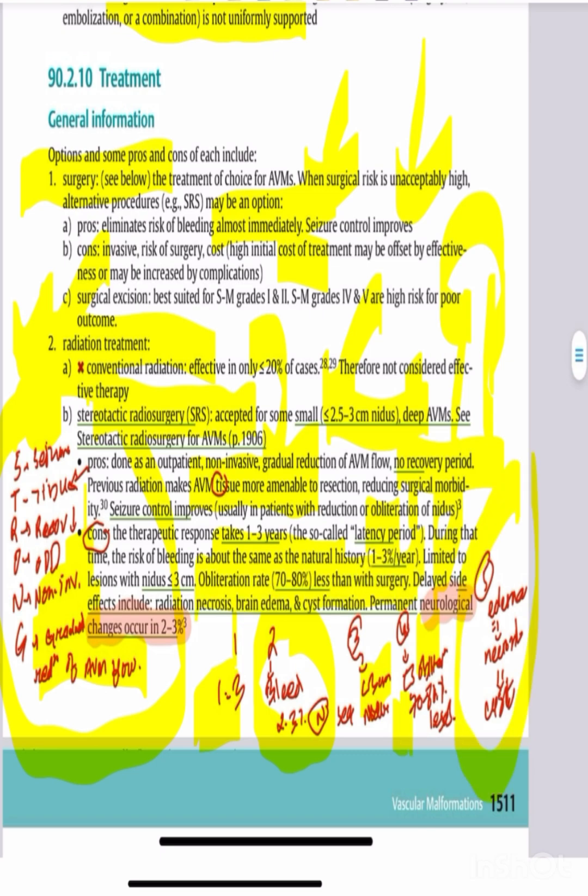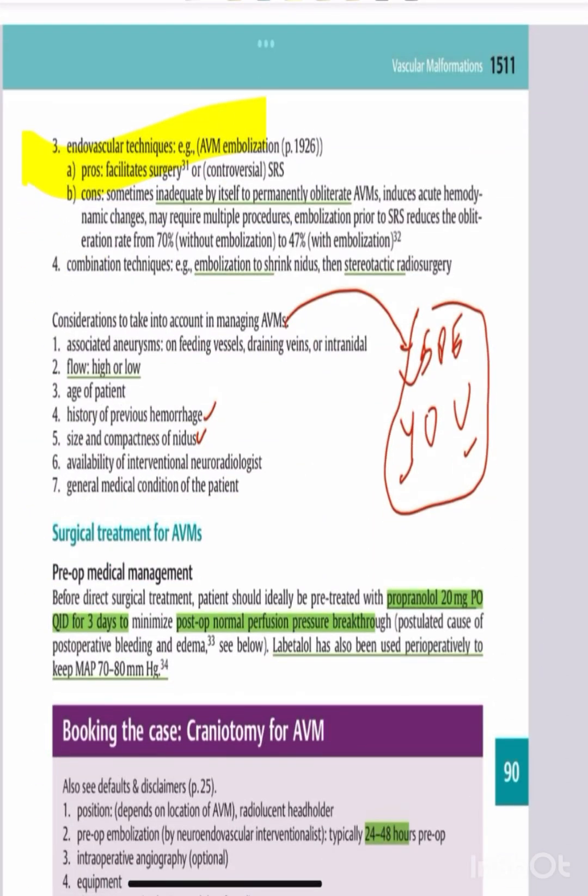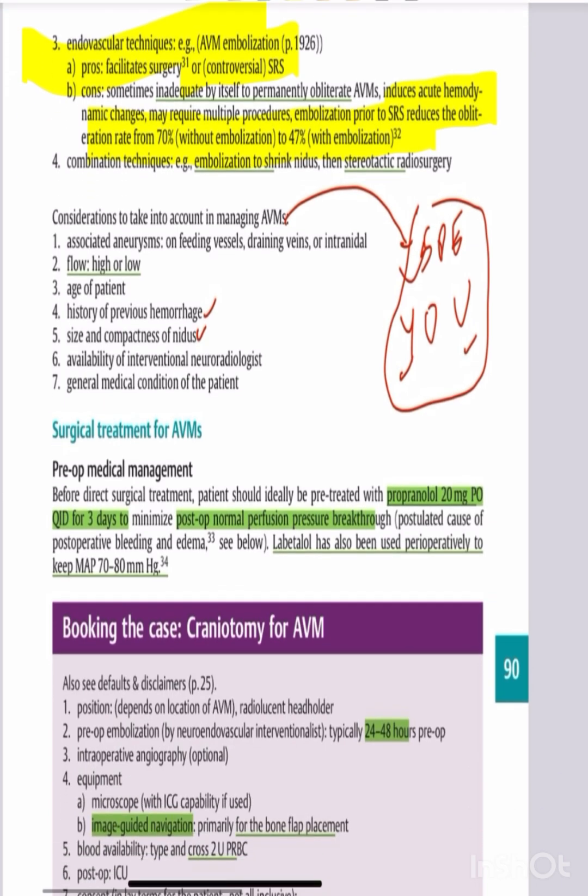Endovascular embolization is another treatment option. Complete obliteration is achieved in 20-30% of cases. It's often used as an adjunct to reduce AVM size before surgery or radiosurgery.